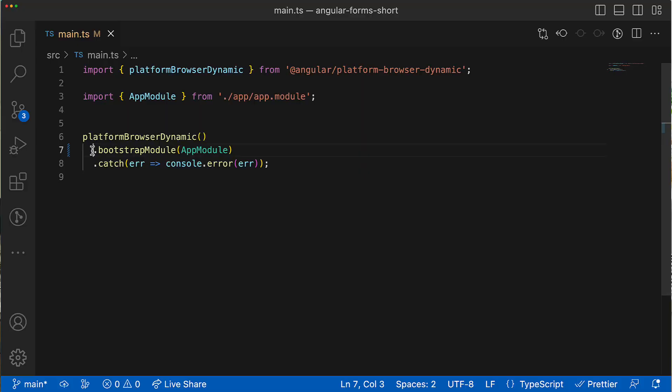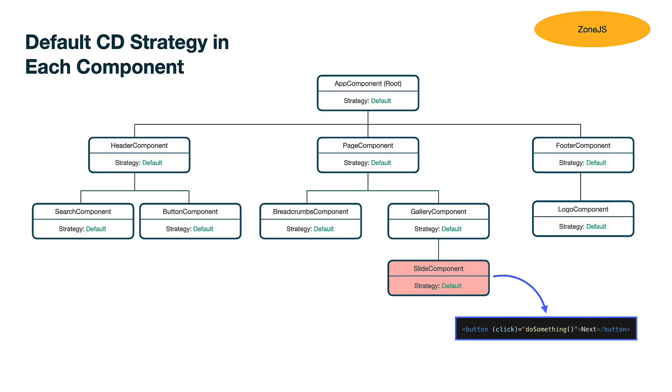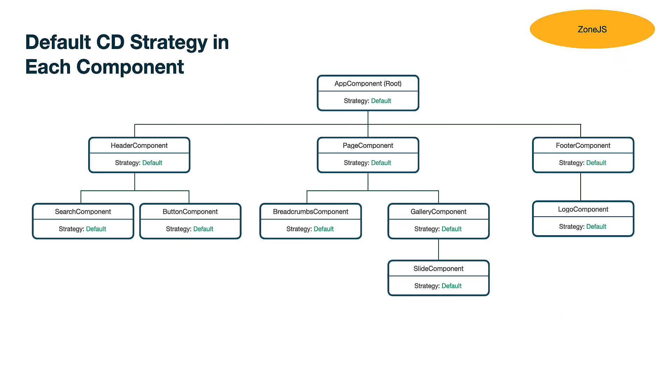Let's quickly recap how change detection works in Angular by default. When the Angular application is bootstrapped, it creates an instance of Zone. Zone is an execution context for Angular applications and is needed to track asynchronous activity on the page — for instance, handling a JavaScript event or something like setInterval. Once such an event happens, Zone.js notifies Angular, and Angular starts performing view checking starting from the root component, recursively for the entire view tree.